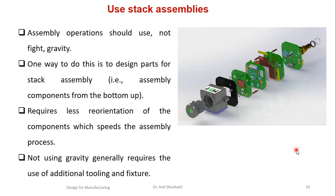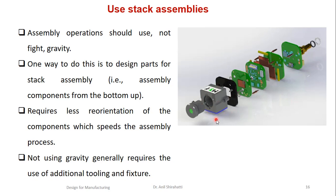The next principle is to use stacking assembly. Assembly operations should use, not fight, gravity. One way to do this is to design parts for stacking assembly — assembling components from bottom to top. This requires less orientation of components, which speeds up the assembly process. Not using gravity generally requires additional tooling and fixturing. An exploded view of an electronic assembly shows how parts go one above the other, first, second, third, fourth, to get the final assembly, reducing assembly cost and time.